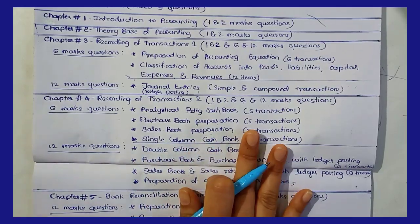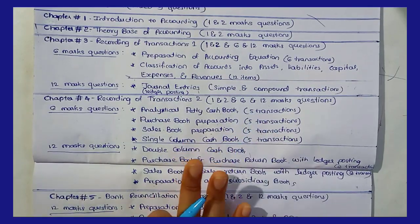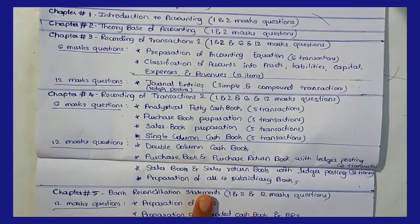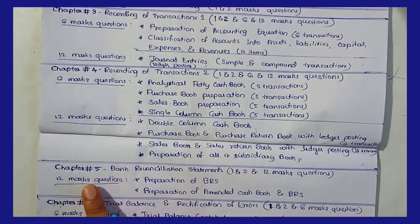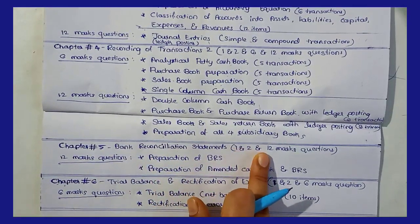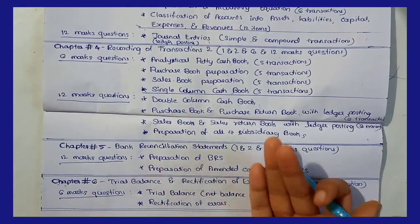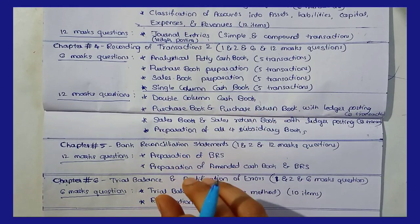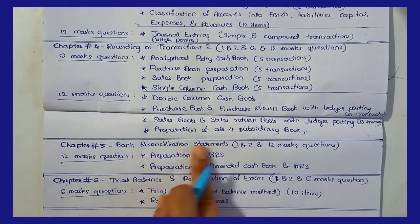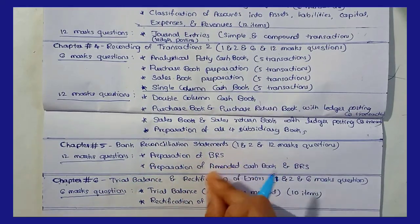Cash book is a very easy topic, but still you may have confusion. Chapter 5 — Bank Reconciliation Statement. In this chapter, there are 12 marks. There are no questions in the 6 mark section. We will solve this in 2-3 minutes. You will check the BRS chapter — there are tricks. I have already explained that.